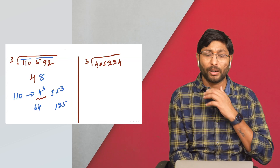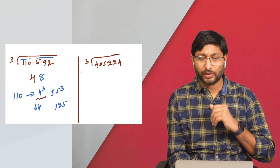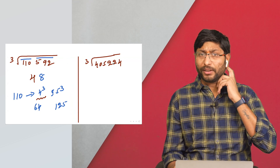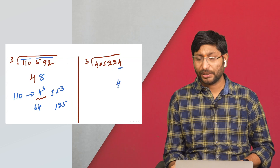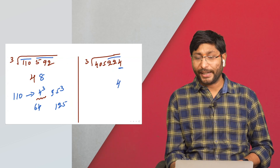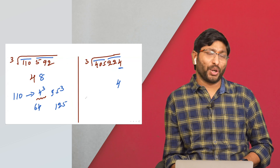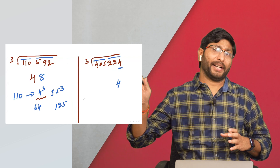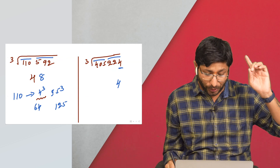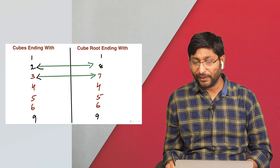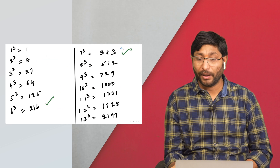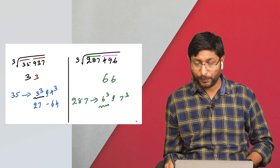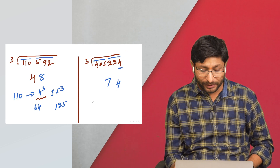Solution for cube root of 405224: the cube root is ending with 4, so the answer also ends with 4. Split into 3 digits and 3 digits. Consider 405: it comes between 7³ and 8³, so the lower number is 7. Therefore the answer is 74.